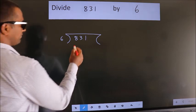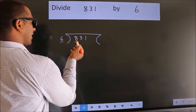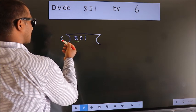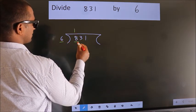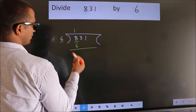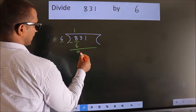Next, here we have 8, here 6. A number close to 8 in the 6 table is 6×1=6. Now we should subtract. We get 2.